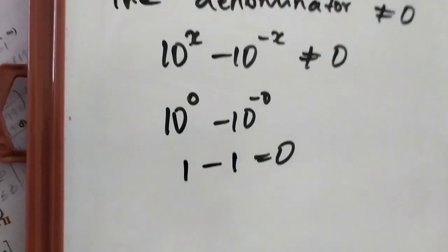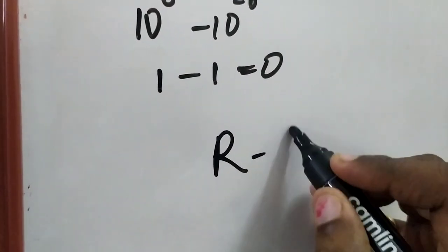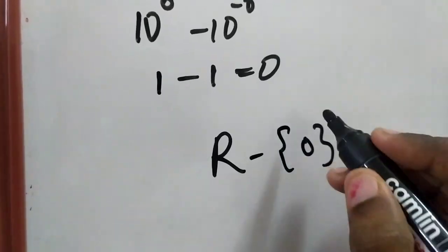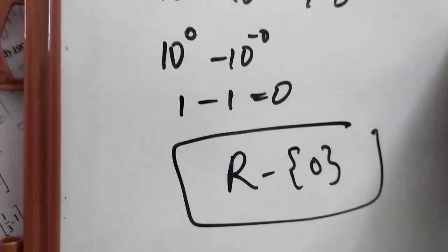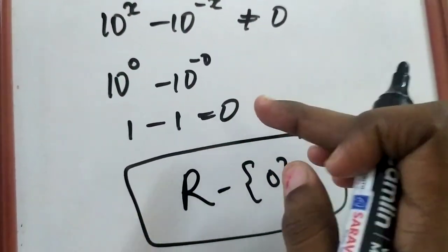What you have to write is you can take any real numbers but you should not consider the 0 alone. That is what your domain is. When you are substituting 0 instead of x, you are getting the value like 0.